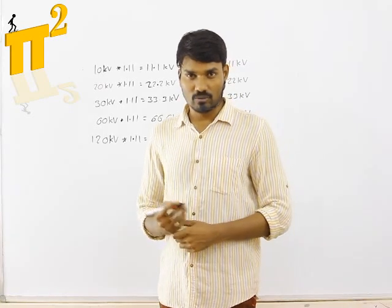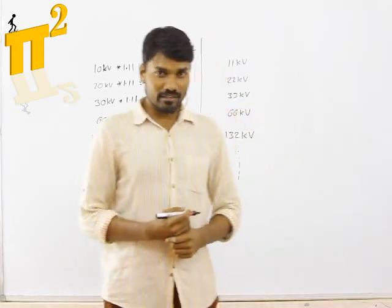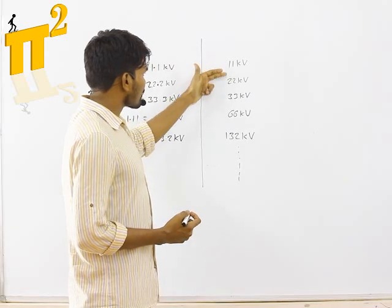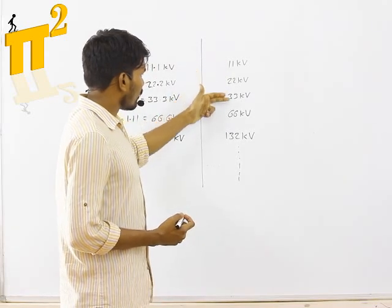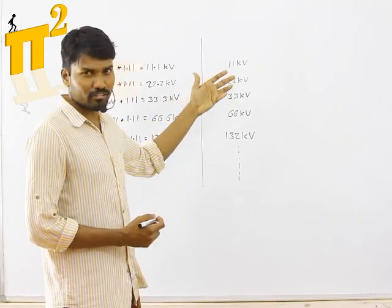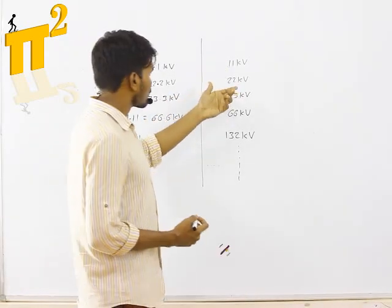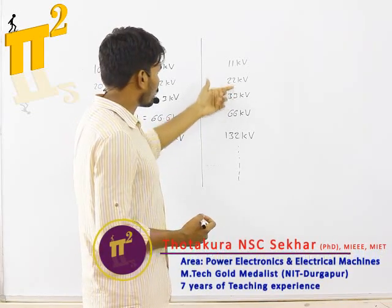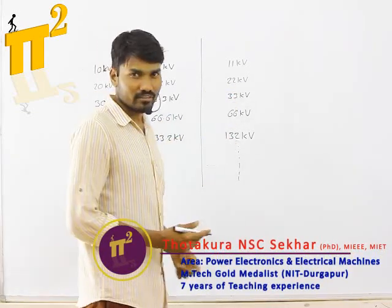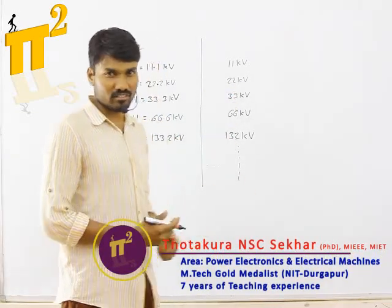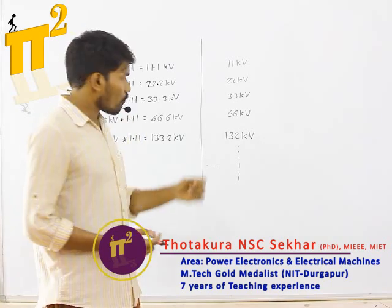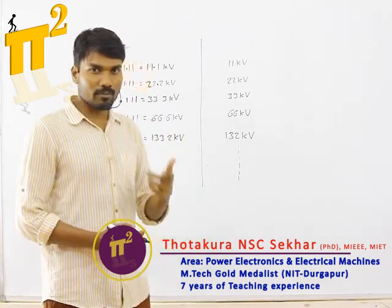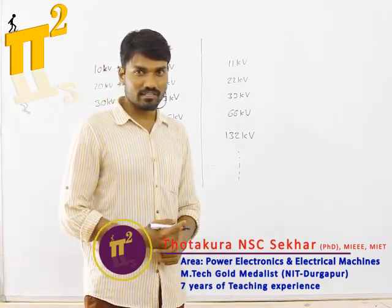In India, we know the voltage levels are like 22 kV, 33 kV, 132 kV — such odd figures. So why these numbers?